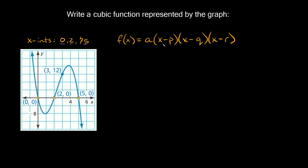Just to break this down: the 'a' right here is just a coefficient, and p, q, and r are your x-intercepts. So since we have three x-intercepts that's why we need our three sets of parentheses. Let's start filling this out.